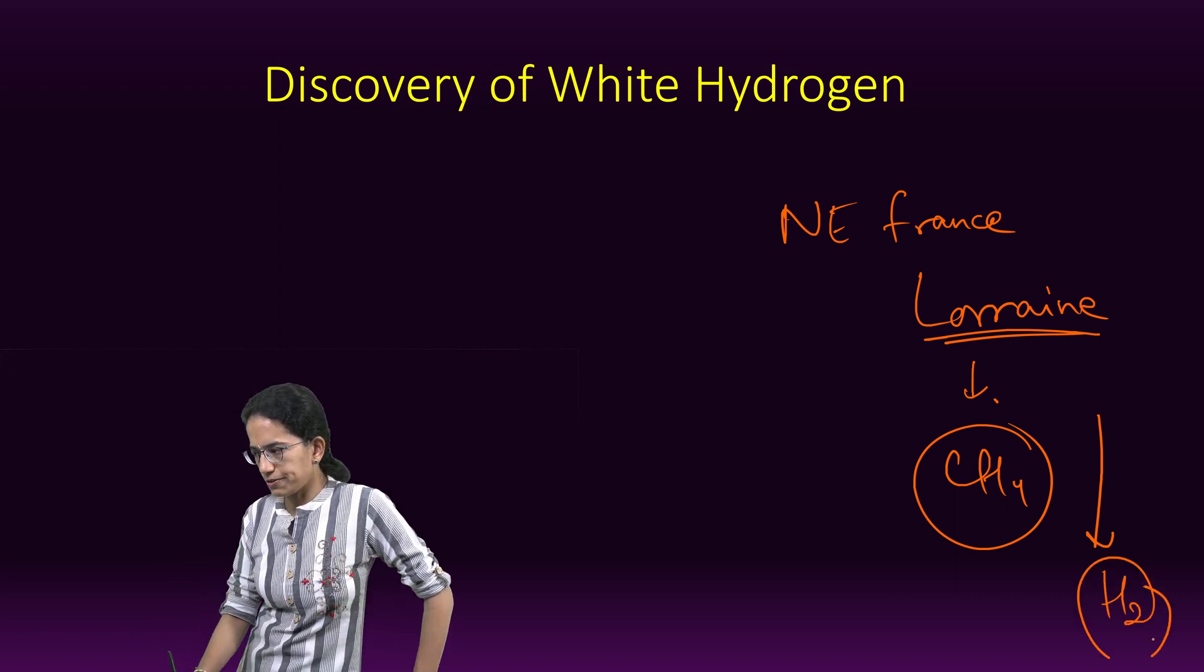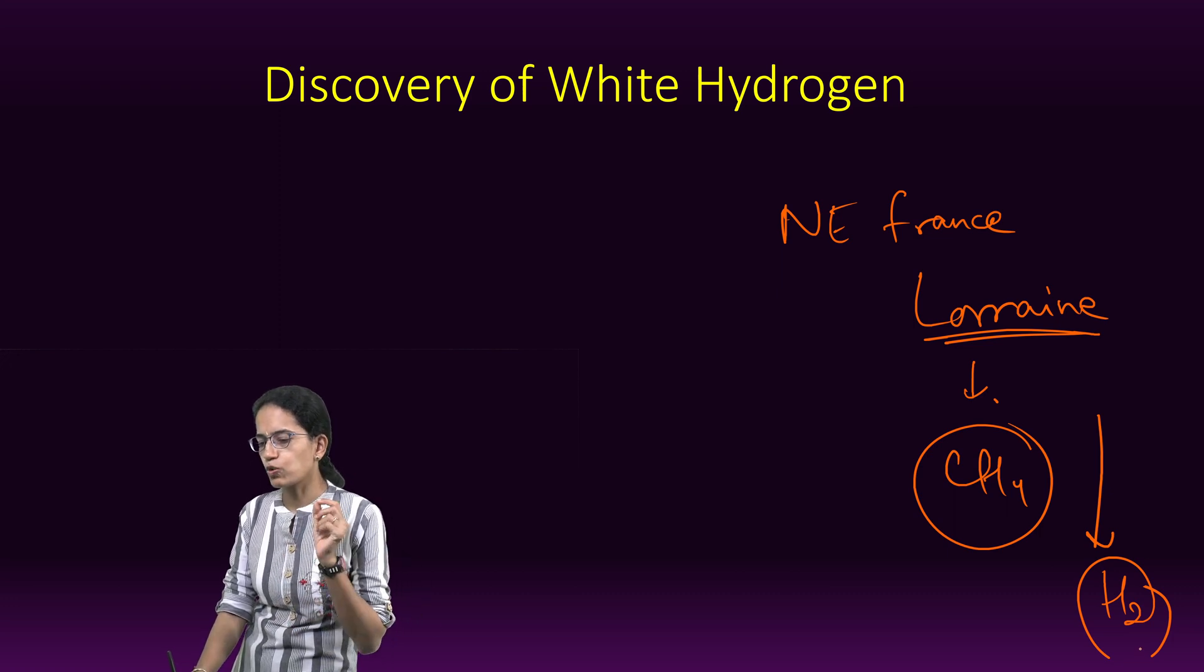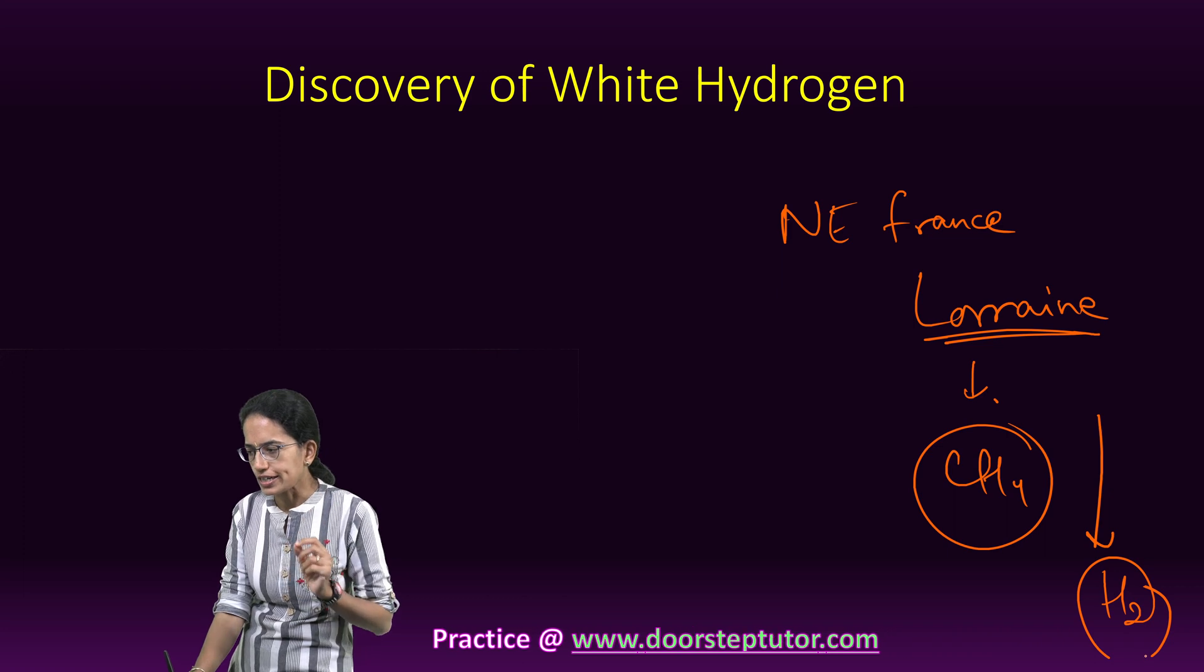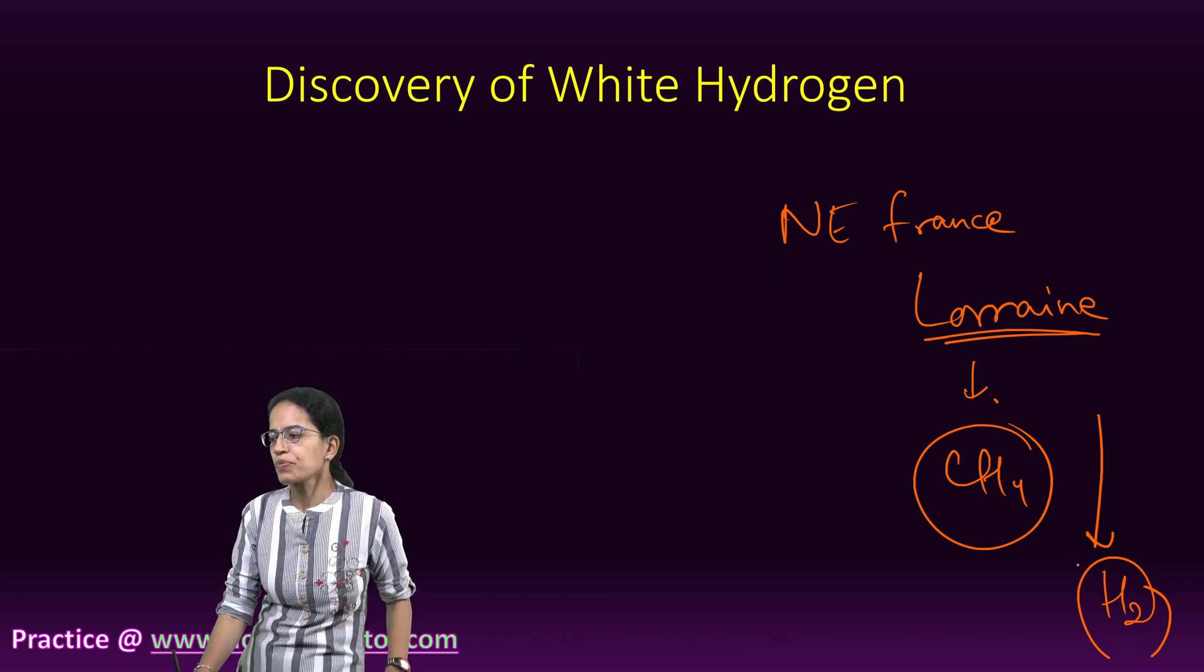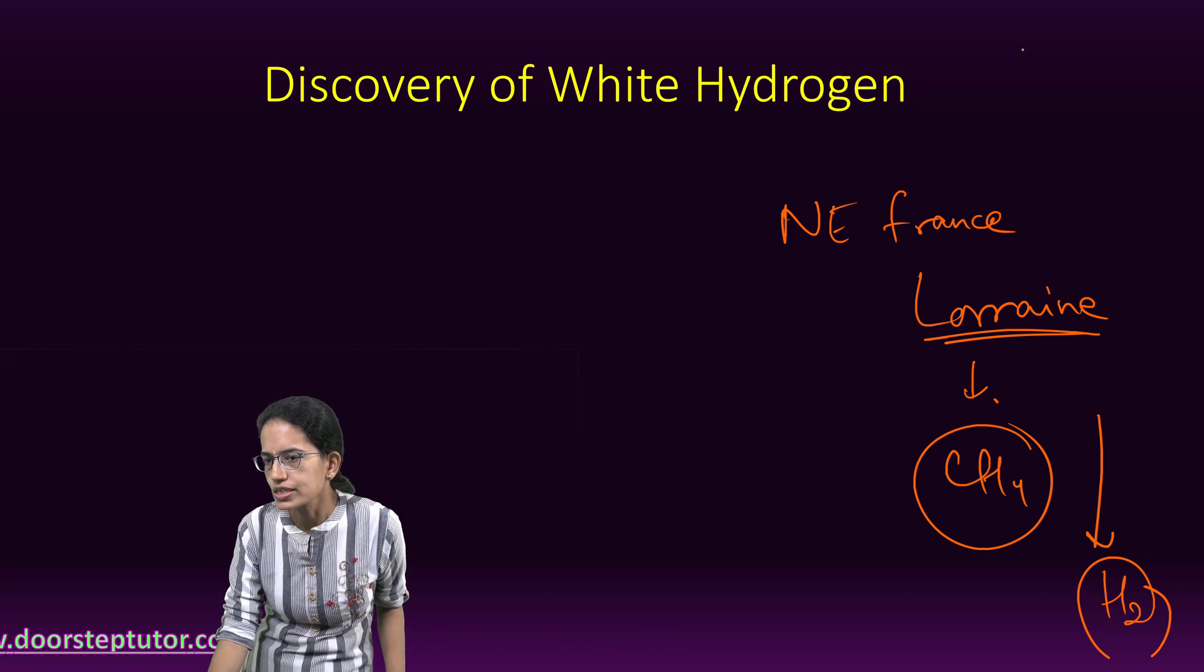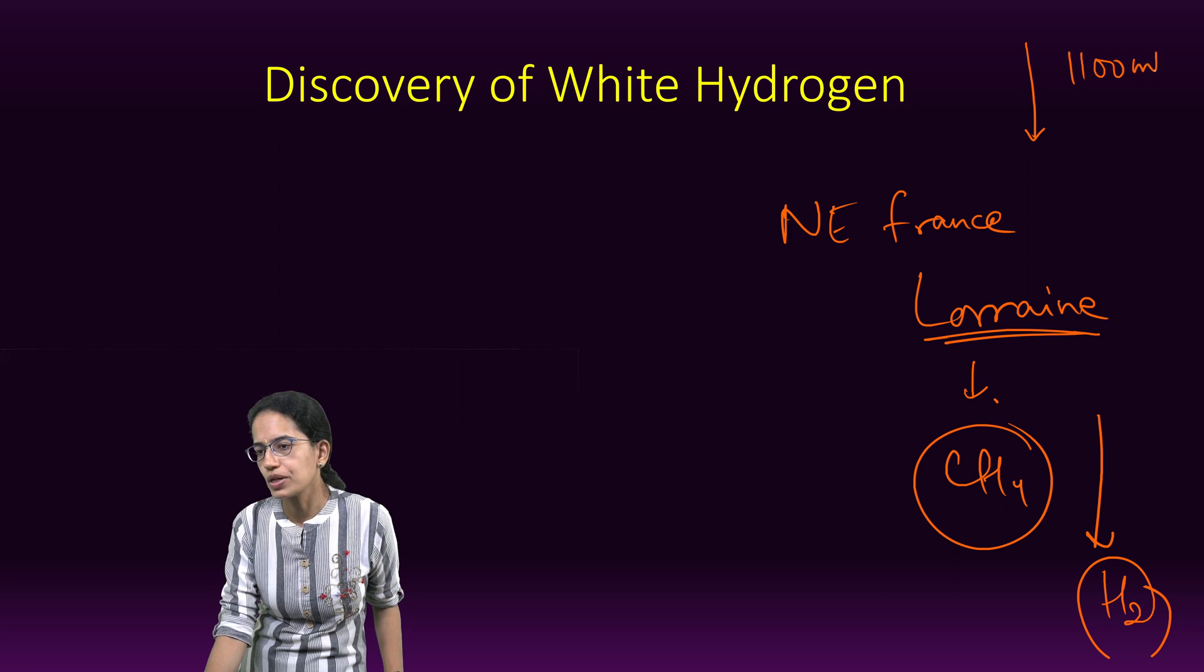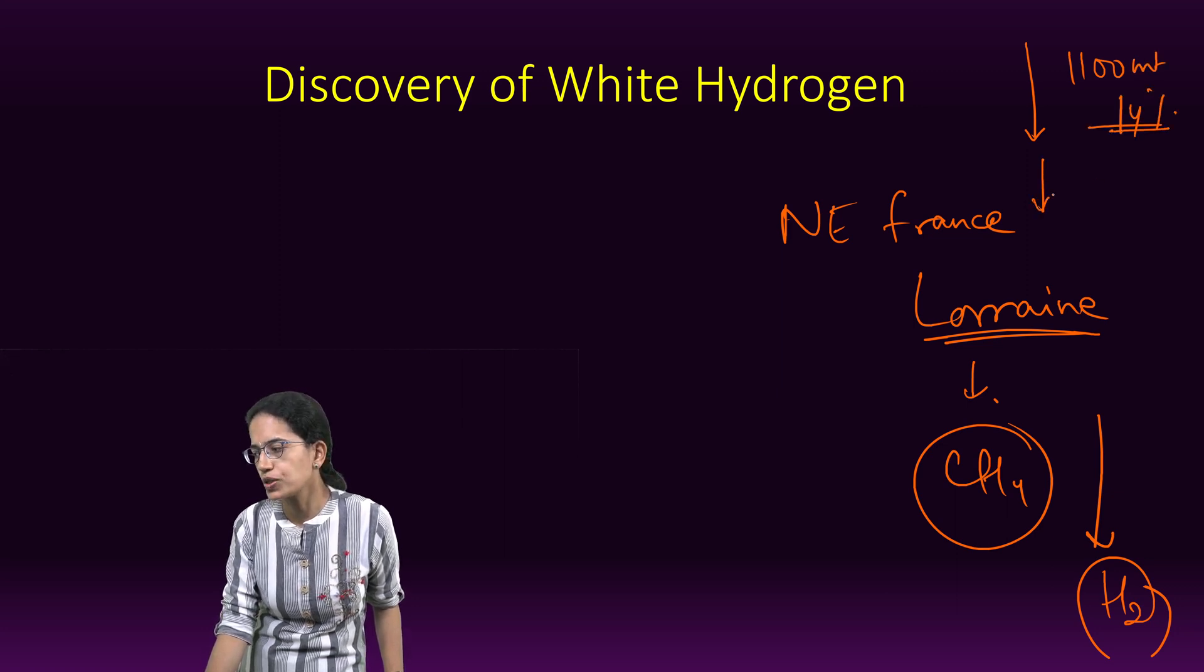When they were digging the probe, they found a huge reservoir of hydrogen. One of the largest discoveries of white hydrogen was made here because this was in the most natural form. The most interesting fact was as they went down and deeper at nearly 1,100 meters, 14% was found. But as they went further deep to 1,250 meters, this proportion increased to 20%.